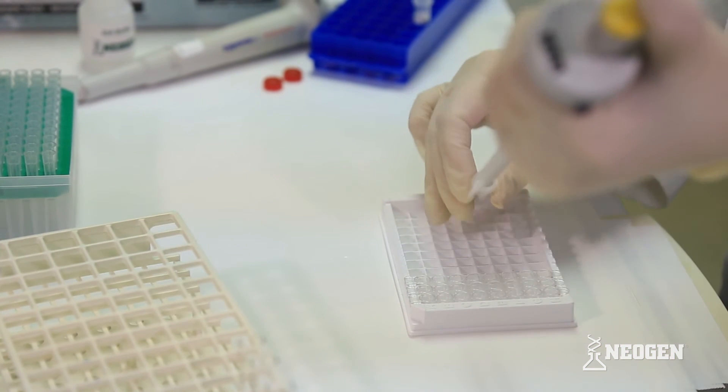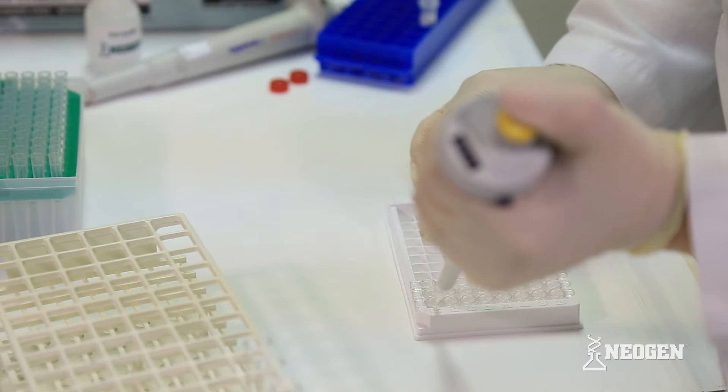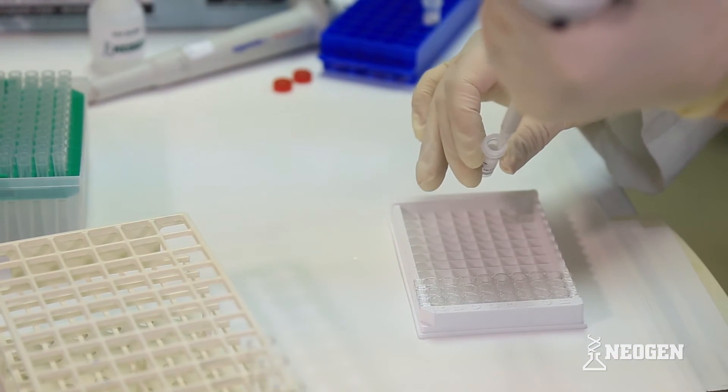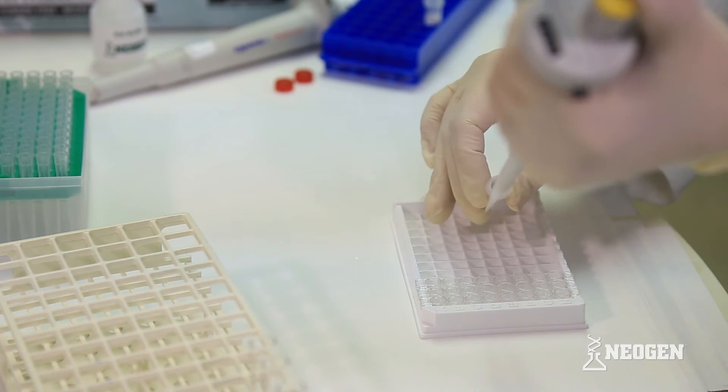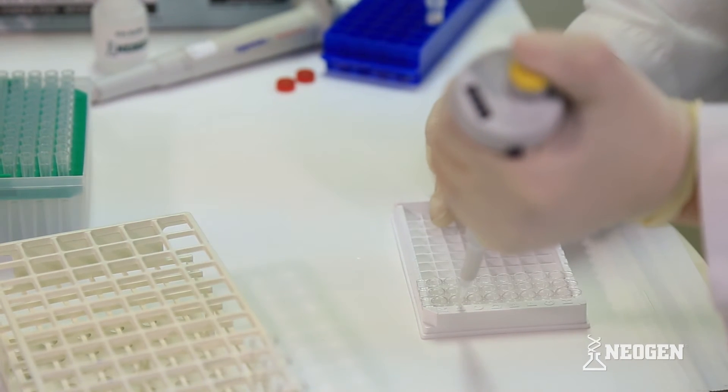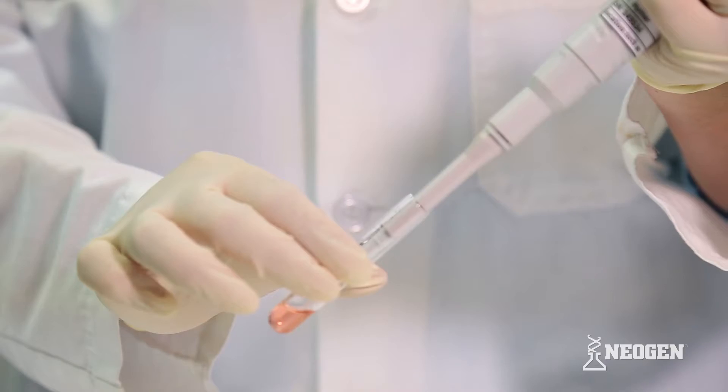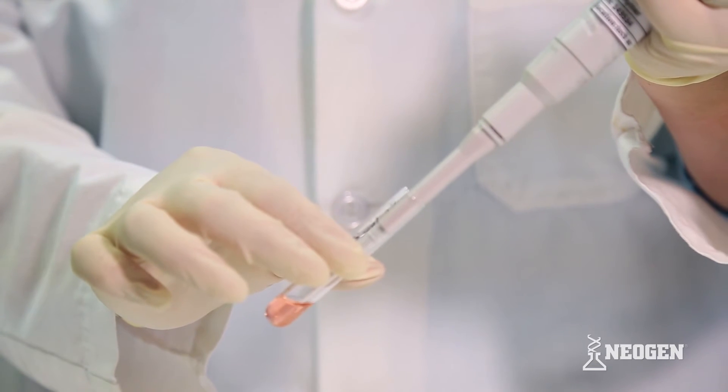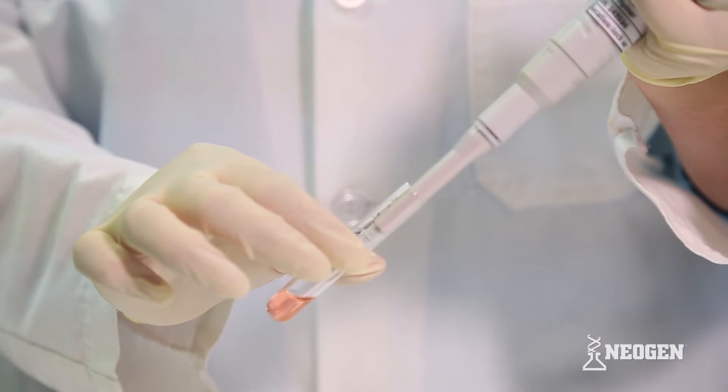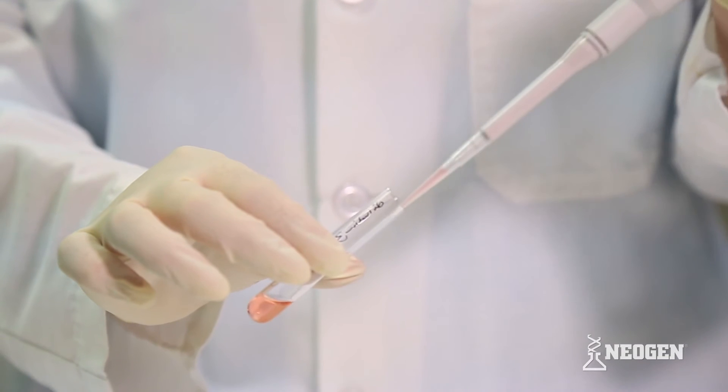Running the assay. Using a clean tip, add the specified volume of sample, calibrators, and/or controls into the appropriate wells. If your kit comes with calibrators, run the calibrators that match your sample type. For best results, prime the pipette tip before adding the sample into the bottom corner of each well at a 45 degree angle.